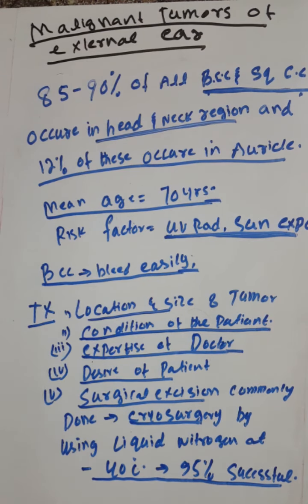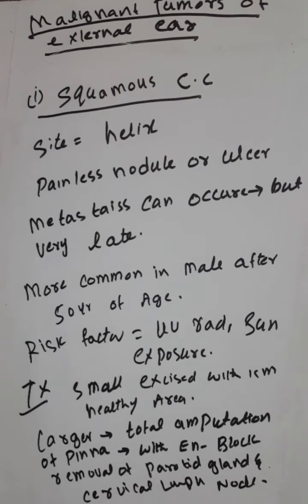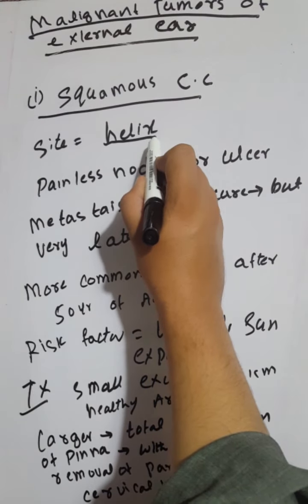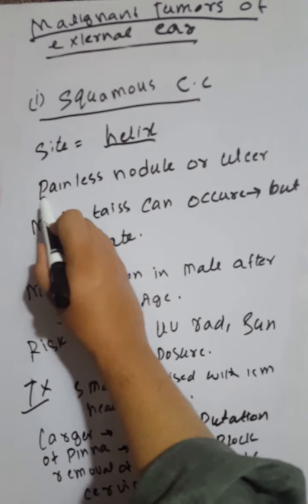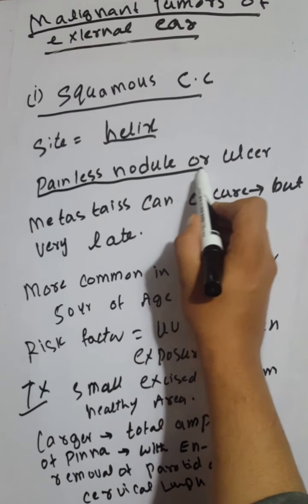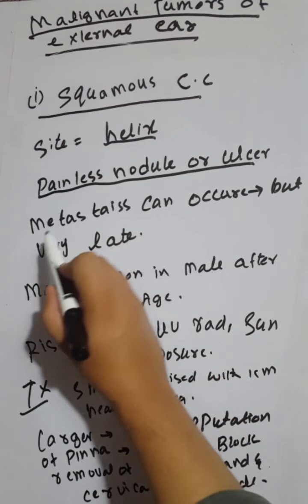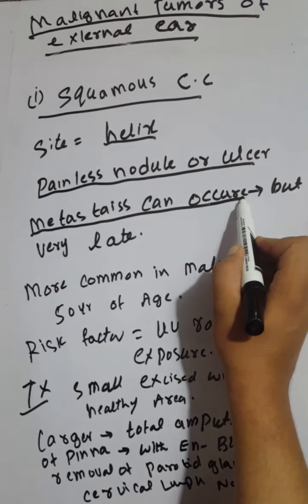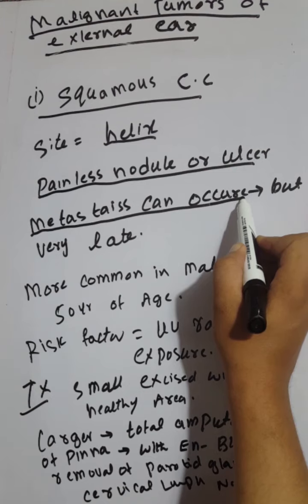Now we discuss the two main types: basal cell carcinoma and squamous cell carcinoma. First is squamous cell carcinoma. The primary site for squamous cell carcinoma is the helix, and it presents as a painless nodule or ulcer. Metastasis can occur in squamous cell carcinoma, but it is very late. In contrast, basal cell carcinoma does not metastasize.